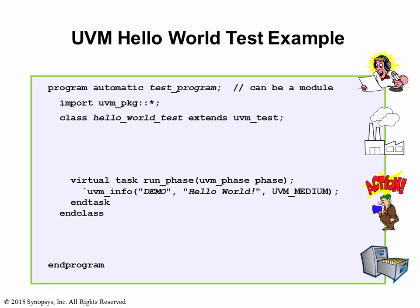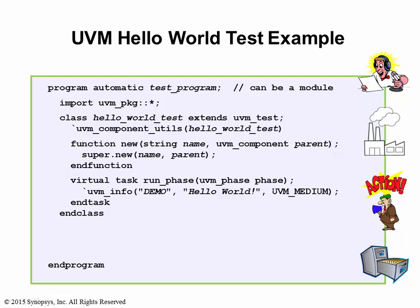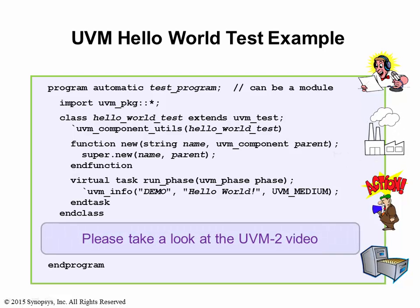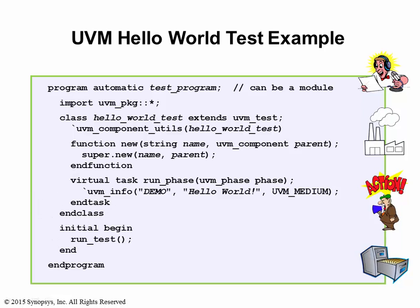All UVM test classes are also required to be registered into the UVM factory through a macro and the associated constructor format. For more details on the UVM factory, please take a look at the UVM2 video of the series. To enable UVMroot to automatically execute the test for you, you need to call the RunTest method in the initial block.